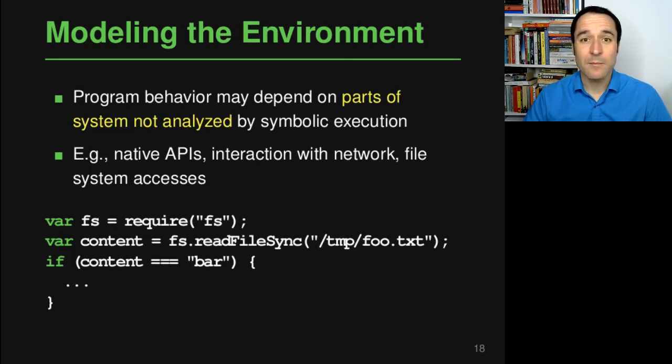So the key problem here is that a program may actually have some behavior that depends on some part of a more complex system that just cannot be analyzed by symbolic execution. For example, this could be some native API. So let's say you have a symbolic execution tool that reasons about JavaScript code, but sometimes it's calling a native API that is implemented in C++ and then compiled to native code. Then your tool that works for JavaScript just can't analyze this native API. An even more challenging problem is if your code is interacting with the network. Or you may have the problem that your program is accessing the file system, is maybe reading something from the file system, and then the behavior depends on what was read.